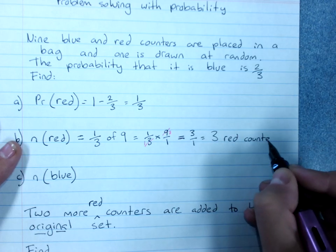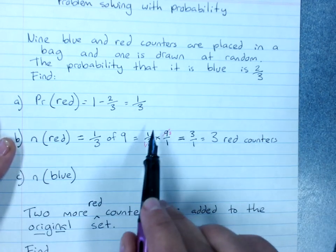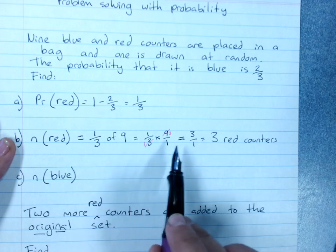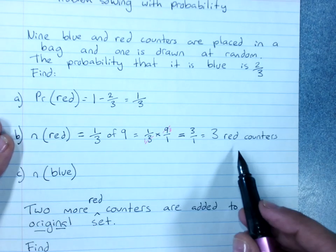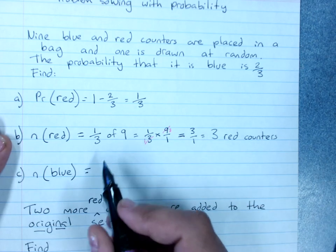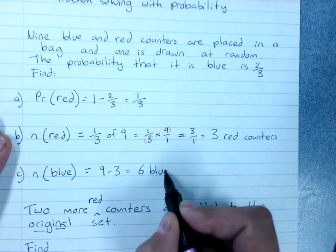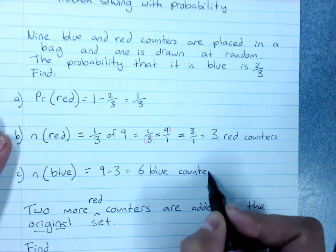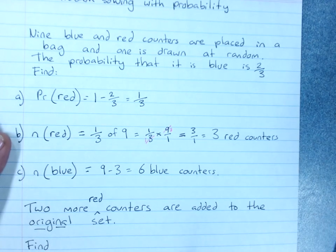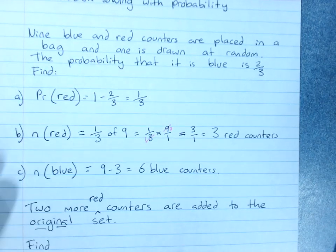Now I know that's a little bit of a complicated way to find 1 third of 9, but I just thought I'd mention the multiplication of the fraction. And then of course the number of blue counters. You don't even need to do the maths. If there's 3 red, there must be 9 minus 3 is 6 blue counters. So we've done some problem solving. We've worked out how many counters there were from the probability.